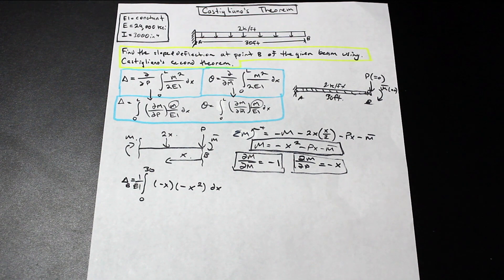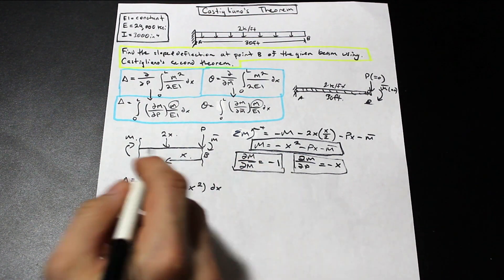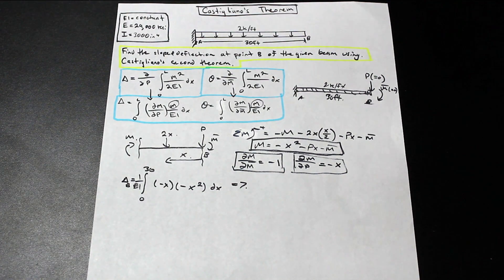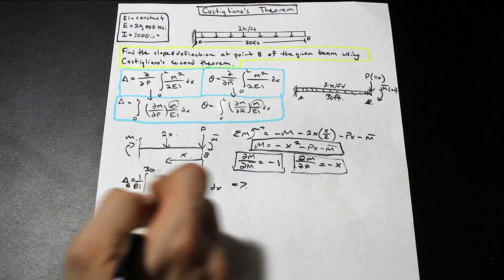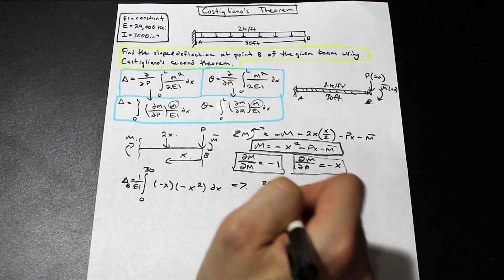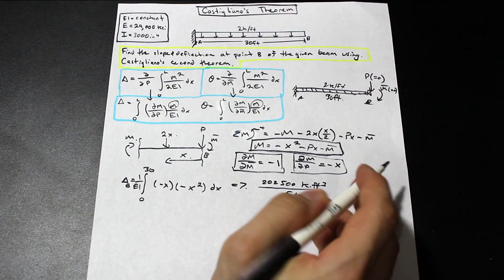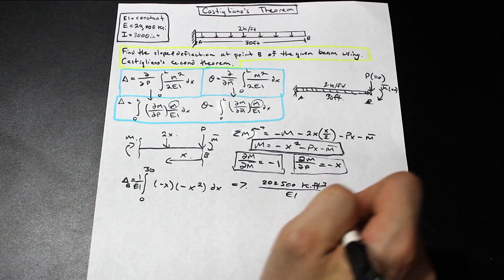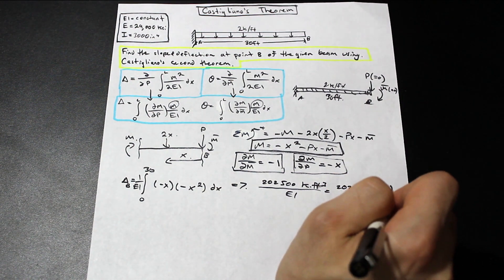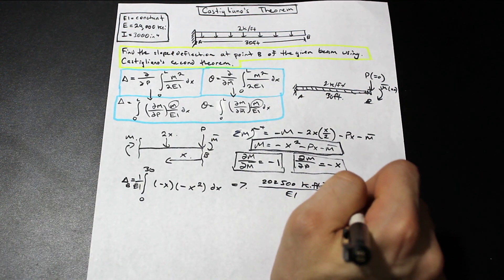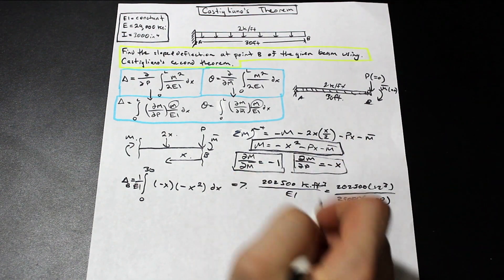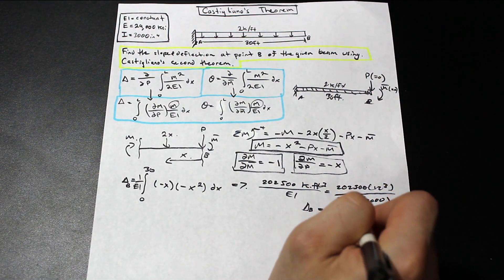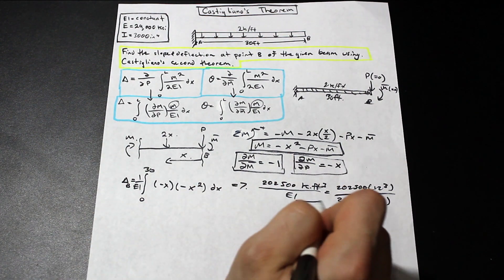Integrating X³ from 0 to 30 is straightforward — use the definite integral function on your calculator to save time and avoid mistakes. Remember to multiply by 12³ to convert from feet cubed to inches cubed, then divide by EI. With E = 29,000 ksi, plugging in all values gives a deflection at B of δ_B = 4.022 inches downward.